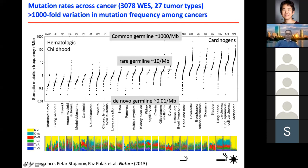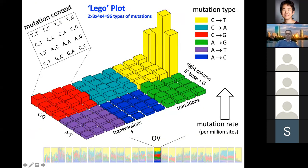We also saw that mutations have different types of substitutions. For example, melanoma has a lot of C-to-T mutations, and cigarette smoke causes a lot of C-to-A mutations. But others have different signatures, and we looked at these signatures in a more detailed manner.